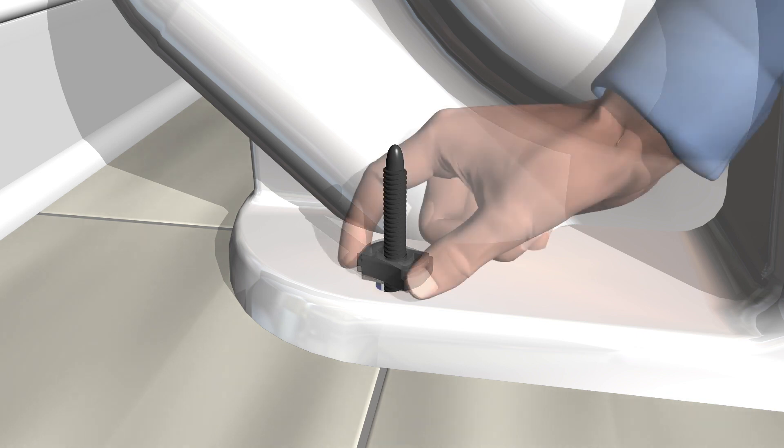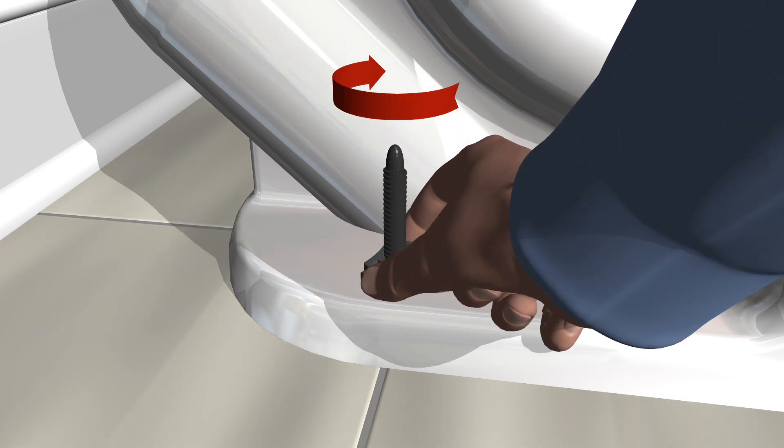Screw on the nut until it is snug to the toilet base. Then give it a half turn to secure the toilet.